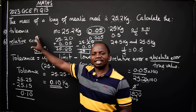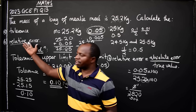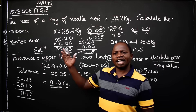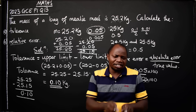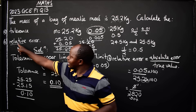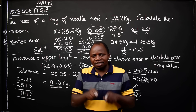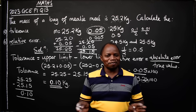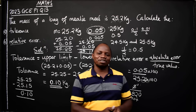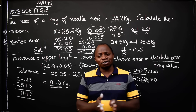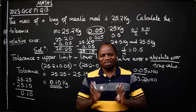Note: apart from tolerance and relative error, they can also ask you to calculate percentage error. The formula for percentage error is: relative error times 100%. I hope you have enjoyed this. Please share the video so that others can also learn, subscribe to my YouTube channel, and follow me on Facebook and TikTok. Thank you for watching.